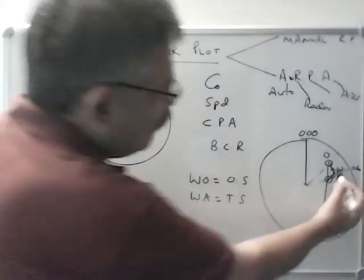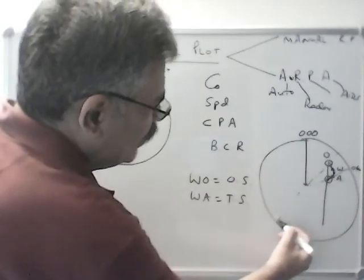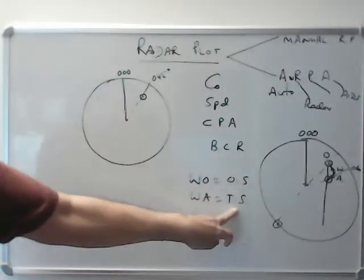WA will be the target ship's course and speed. So WA you can measure by, you can make a line parallel and you can measure it here. Whatever is the reading, that's the course of the target ship.